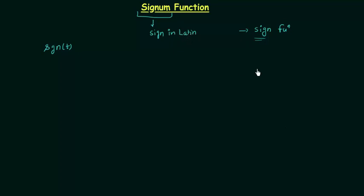Why do we call this function the sign function? We call it sign function because it tells us the sign of real numbers.